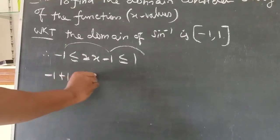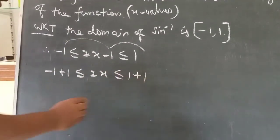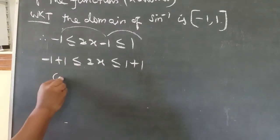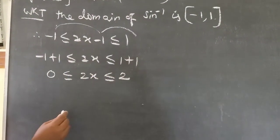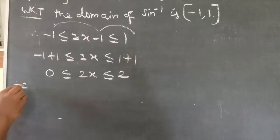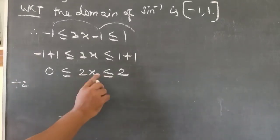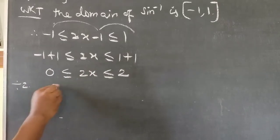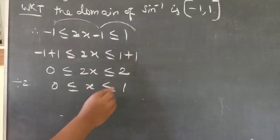Adding 1 to both sides: minus 1 plus 1 less than or equal to 2x less than or equal to 1 plus 1. That is, 0 less than or equal to 2x less than or equal to 2. Divide by 2: 0 less than or equal to x less than or equal to 1.